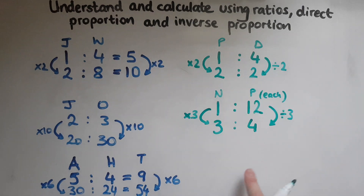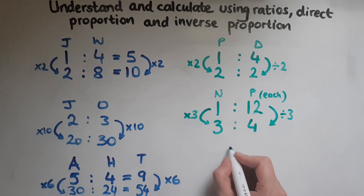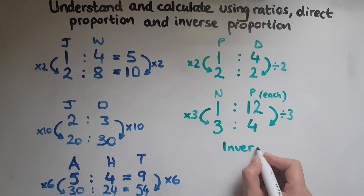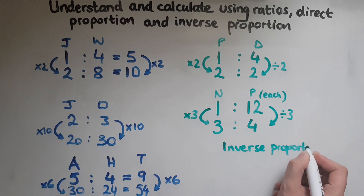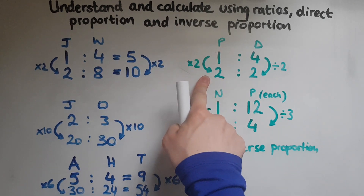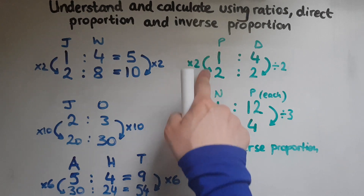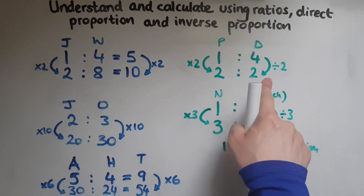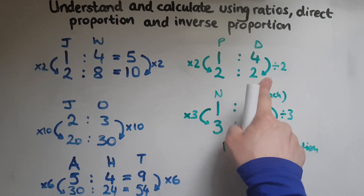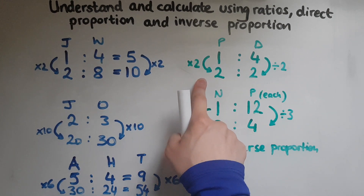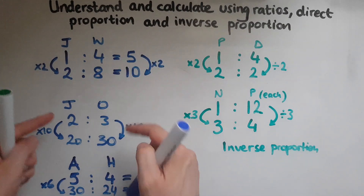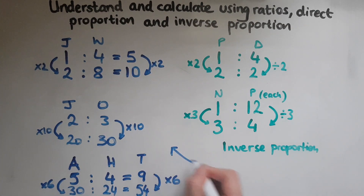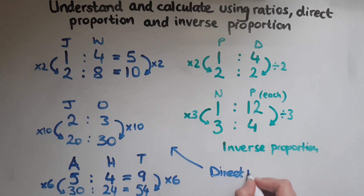As you can see, this is what we call inverse proportion. One side increases, the other decreases. Whatever you multiply one side by, you divide the other side by. When it comes to direct proportion, we multiply both sides by the same number.